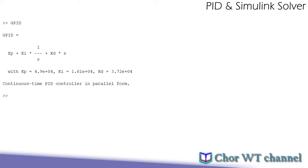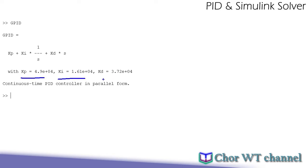Let's say we have this PID controller expressed in the command line using a PID object. This PID is designed with three coefficients: Kp, Ki, and Kd respectively. Now let's look at what happens when we try to simulate the systems with this PID controller.